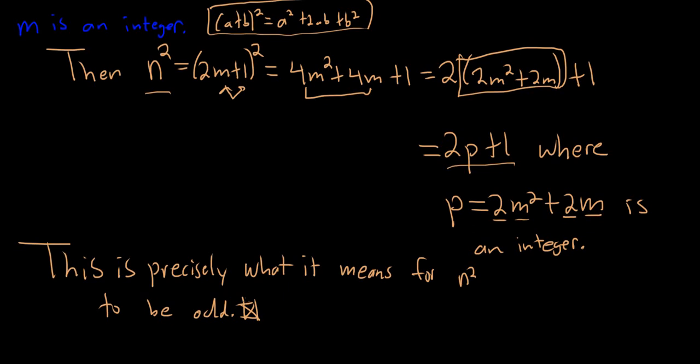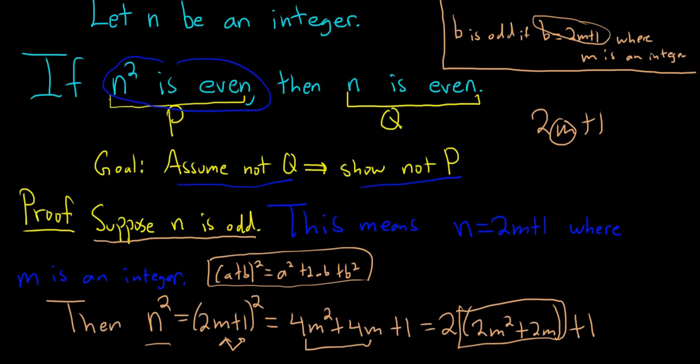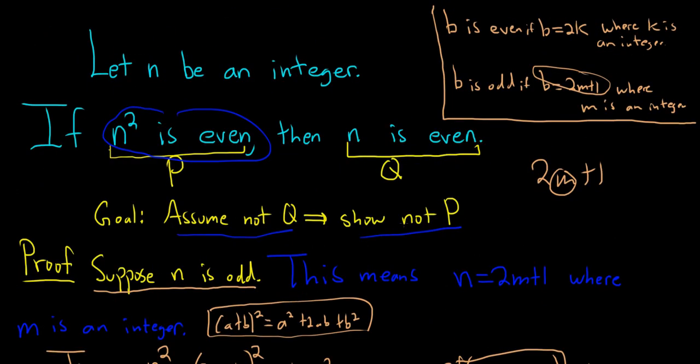So a really simple proof, but hopefully an understandable example of proof by contrapositive. So the main idea is if you're trying to show something like if p then q, sometimes it's easier to do the contrapositive. And this is called a proof by contrapositive.